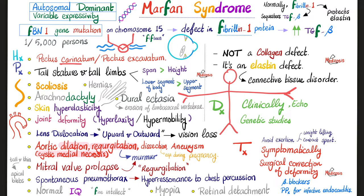Regarding vessels and valves: the aortic root is dilated, causing the cusps to separate and fail to close, resulting in aortic regurgitation. Aortic dissection and aortic aneurysm can also occur due to cystic medial necrosis from the elastin defect. Mitral valve prolapse can occur because the connective tissue support is lost, producing a click followed by a murmur similar to mitral regurgitation — so two regurgitation murmurs total, plus a click.